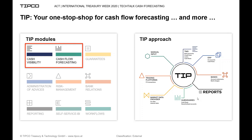Our core approach is that we want to use already existing data as much as possible. We make this data accessible by putting in place automated connectors to all relevant data sources — that can be one or several ERP systems to interface AP and AR ledgers, order data, etc. It can also be a fully fledged TMS in case you already have one in place but lack proper cash flow forecasting functionality, or other source and target systems like trading platforms and market data providers.